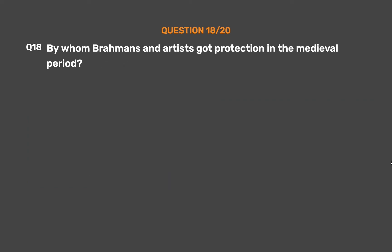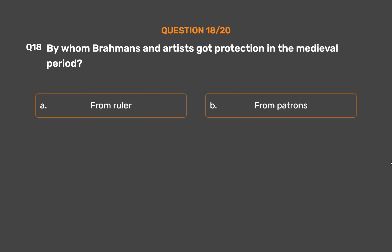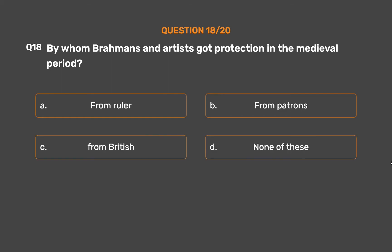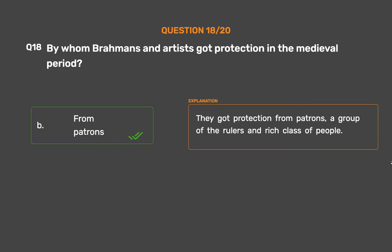Question 18: By whom did Brahmins and artists get protection in the medieval period? Option A: From rulers. Option B: From patrons. Option C: From the British. Option D: None of these. The correct answer is Option B: From patrons. They got protection from patrons — a group of rulers and rich class of people.